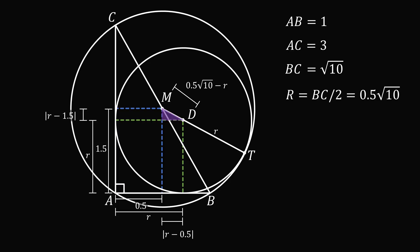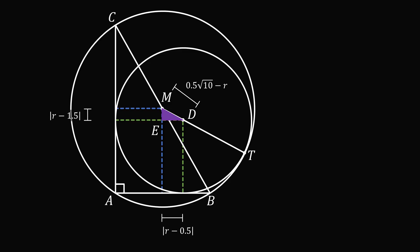We now just focus on this right triangle. Let's say this point is E, and that's the right angle. So we have a right triangle, and we know the lengths of the legs, and we know the length of the hypotenuse. So we have ME squared plus ED squared is equal to MD squared.